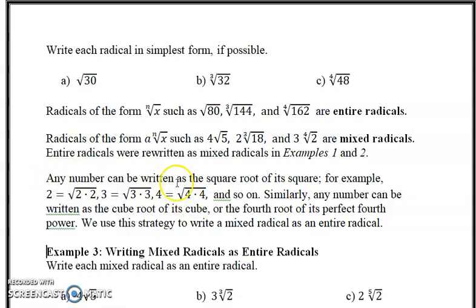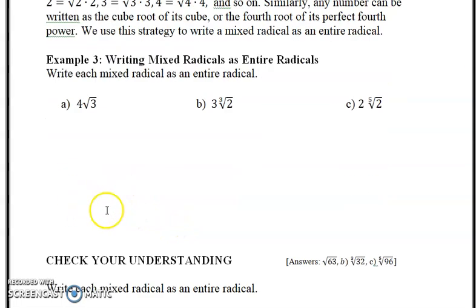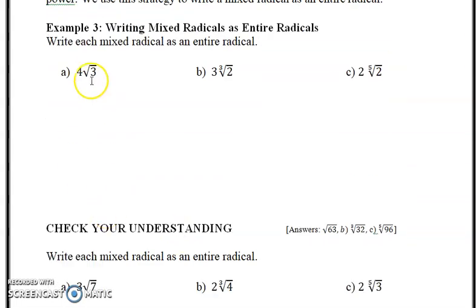Now we're going to go in the opposite direction. Remember, any number can be written as the square root of its square. So 2 equals the square root of 2 times 2, 3 equals the square root of 3 times 3, 4 equals the square root of 4 times 4, and so on. Similarly, any number can be written as a perfect cube, fourth power, and so on. In example 3, we're given a mixed radical and want to make an entire radical.